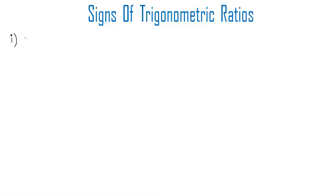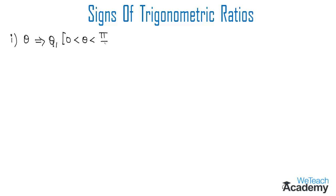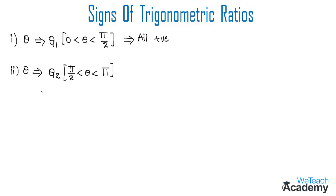If theta lies in the first quadrant (Q1), between 0 degrees and pi/2 — that is 0 < theta < pi/2 — all trigonometric ratios are positive. If theta lies in the second quadrant, where pi/2 < theta < pi, only sine and cosecant are positive and the rest of the ratios are negative.